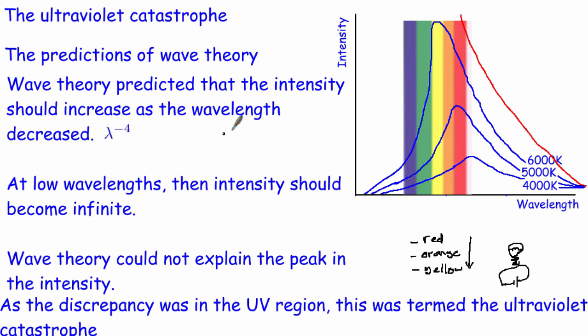Wave theory predicted that the intensity should increase as the wavelength decreased. In actual fact, it went like lambda to the minus 4. In other words, the intensity is proportional to 1 over lambda to the power of 4. So as the wavelength gets bigger, the intensity should get less and vice versa. This red line shows what wave theory would predict. Obviously, it's not showing this whatsoever because there's no peak and it doesn't fall back down again. At low wavelengths, wave theory predicted that the intensity becomes infinite, which breaks the law of energy conservation. Wave theory just couldn't get this to work at all.